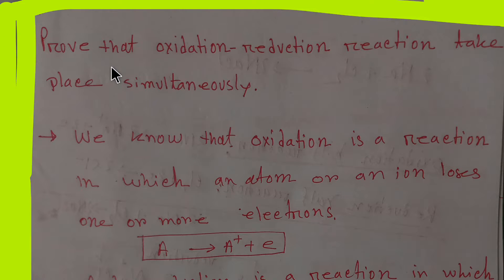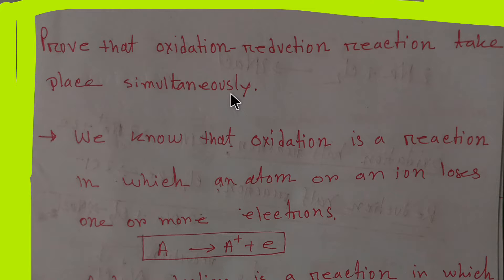What's up guys, today I'm going to teach you some important questions from chemistry, so let's get started. We need to prove that oxidation and reduction reactions take place simultaneously. If oxidation happens, then of course reduction will happen.